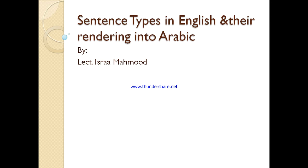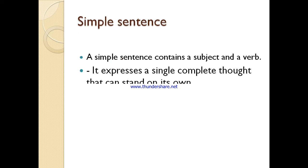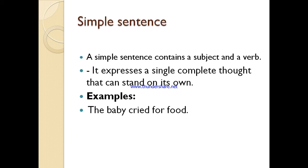Good morning. Today we are going to explain sentence types in English and their rendering into Arabic. First of all, we have to know that we have four kinds of English sentences: simple sentence, compound sentence, complex sentence, and compound-complex sentences.